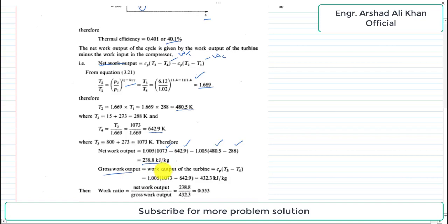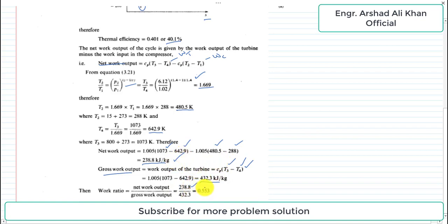The gross work output is equal to the turbine work output, which is Cp(T3 minus T4). With Cp equal to 1.005 kJ per kg K, putting in the values gives a gross work output of 432.3 kJ per kg. The work ratio is therefore 238.8 divided by 432.3, which gives 0.553.